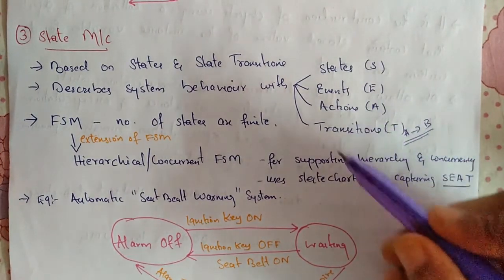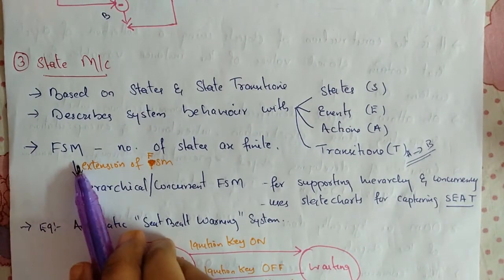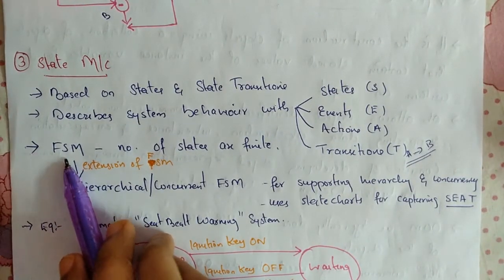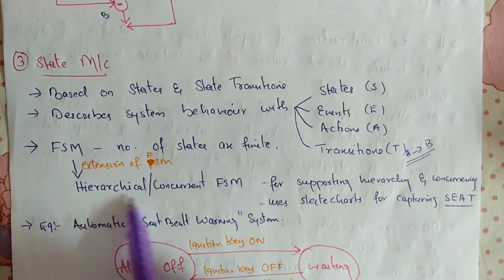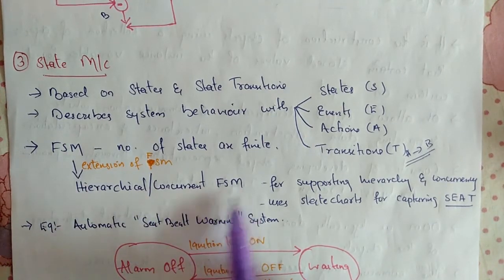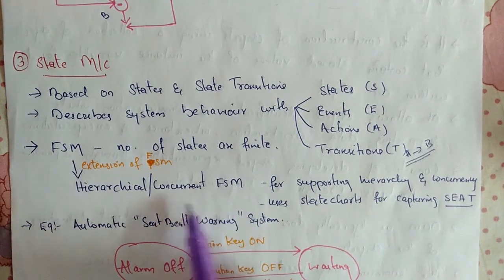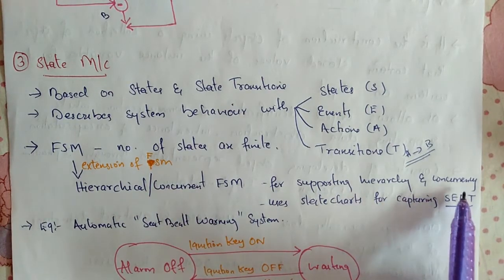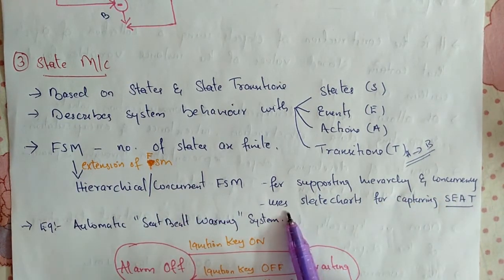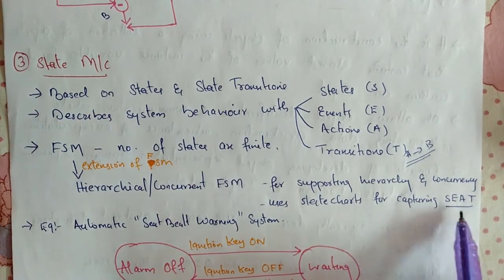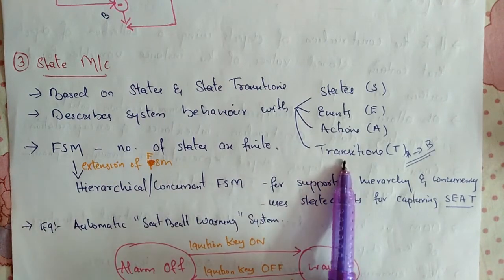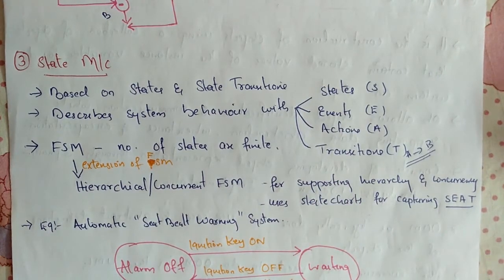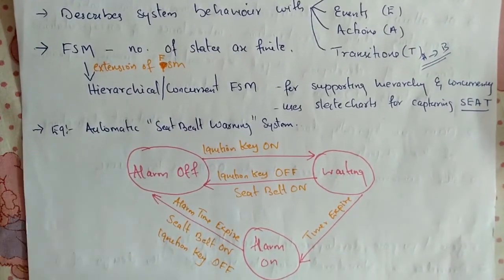The FSM — Finite State Machine — has a finite number of states. An extension of the FSM is the hierarchical concurrent FSM, which supports hierarchy and concurrency, and uses state charts for capturing states, events, actions, and transitions.